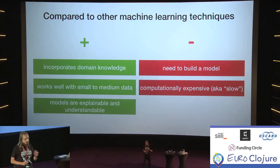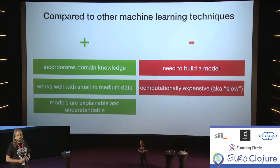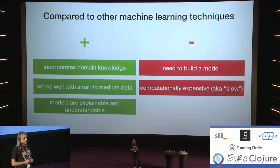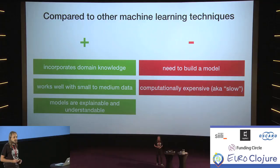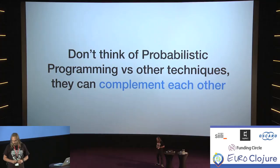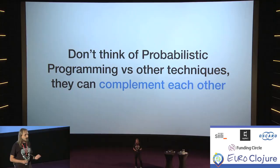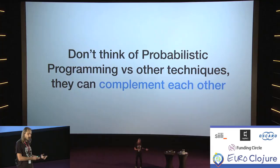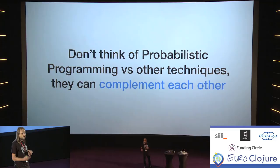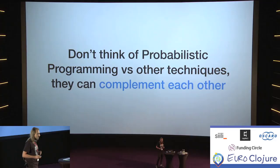An important pro is that you are able to explain the model. You can peek at the different decision points and reason about how it comes up with a decision. For example, new EU laws require you to be able to explain AI agents such as self-driving cars — and this works very well with probabilistic programming compared to deep learning. That said, it's important not to think of probabilistic programming versus other machine learning techniques, but rather how they complement each other. Different techniques are going to be merged and integrated — neural nets and probabilistic programming are not mutually exclusive but can work well together.